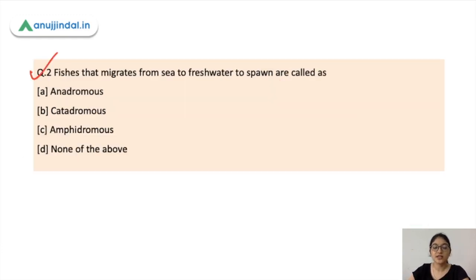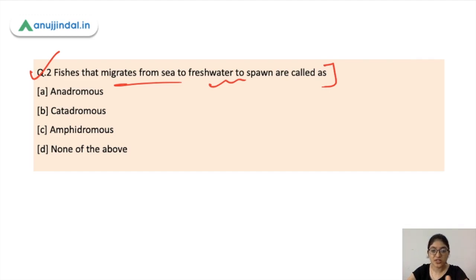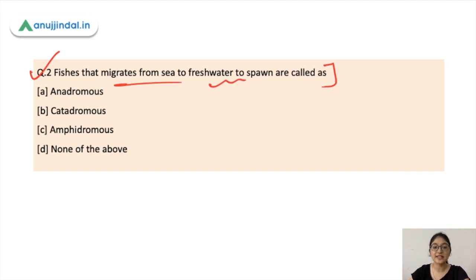The next question is: fishes that migrate from the sea to fresh water to spawn are called what? Some fishes migrate from fresh water to the sea or ocean to lay eggs, and this is a class of fish. The correct answer is A — Anadromous.